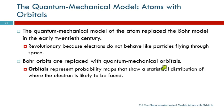So in some sense, they're like the orbits, but mostly not at all. Quantum mechanical orbitals are different than orbits. They are really probability maps that show a statistical distribution where the electron is likely to be found. So it's like a region of probability. Probably the electron's in there somewhere.